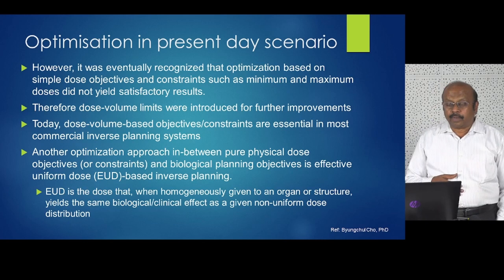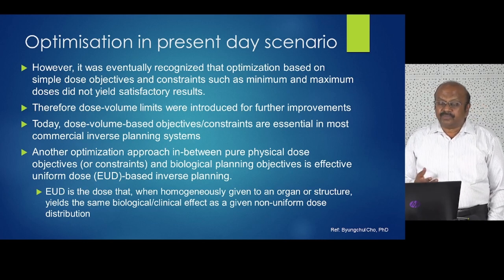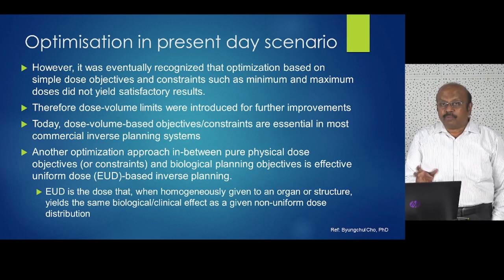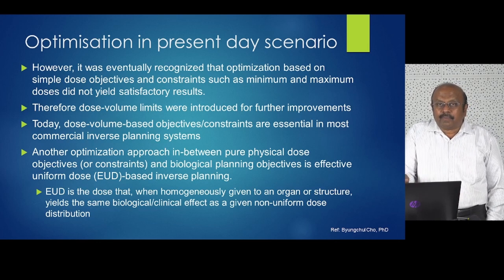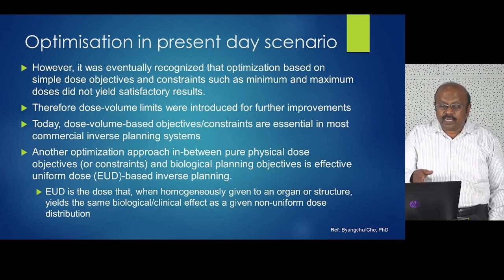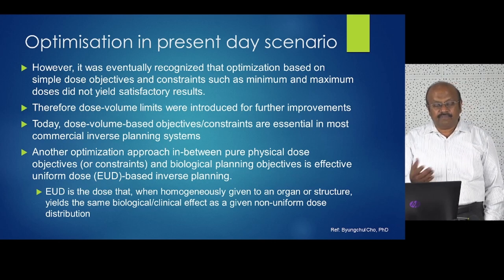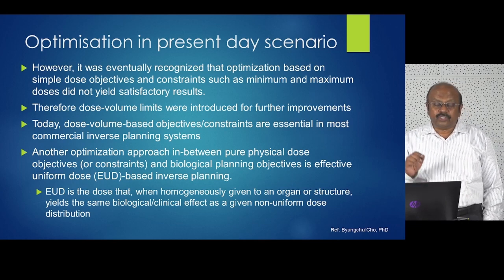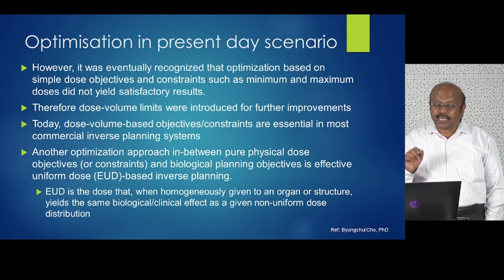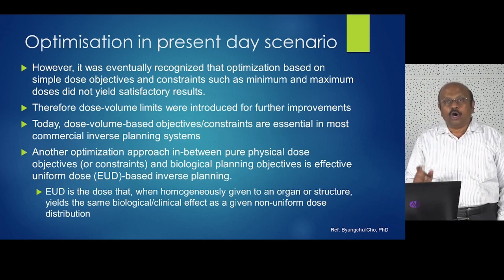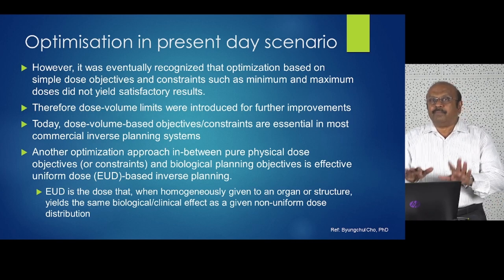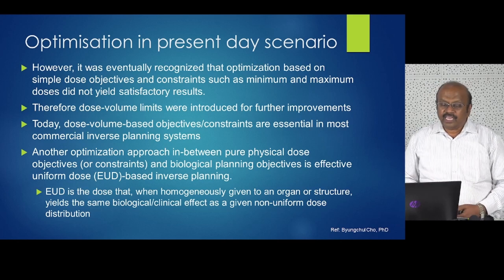Another optimization approach between pure physical dose objectives and biological planning is the effective uniform dose, or EUD. It is neither completely biological nor completely physical planning. EUD is the dose that, when given homogeneously to an organ or structure, produces the same biological and clinical effect as a given non-uniform dose — so whether homogeneous or non-homogeneous, it gives the same biological effect.